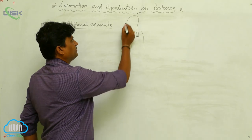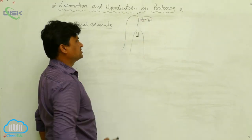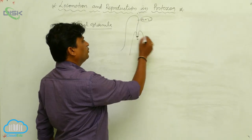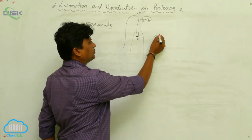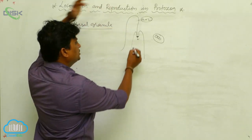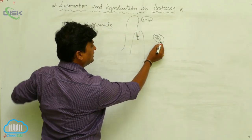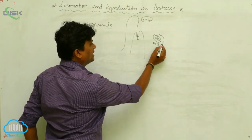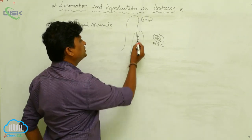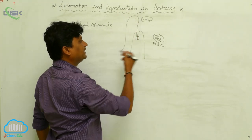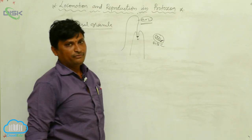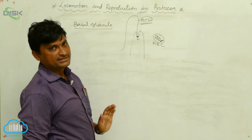This type of flagella exhibits nine-plus-two orientation above the pellicle. Below the pellicle, we do not have the nine-plus-two arrangement; instead, we have only triplets — only nine triplets — with no two central filaments. This is because the two central filaments and the A-B-C triplets cannot extend out from the pellicle; they terminate at the pellicle area. Only two tubules are formed at the outermost area of the pellicle, giving the nine-plus-two arrangement above and triplet arrangement below the pellicle.